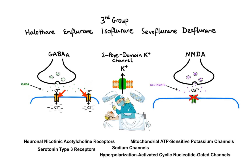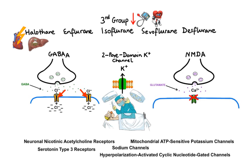When it comes to side effects of group 3 agents, all produce a dose-dependent reduction in blood pressure and cardiac output. Halothane in particular may cause cardiac arrhythmias and hepatotoxicity, while sevoflurane may cause renal toxicity.